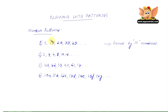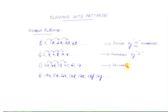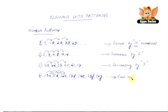Can you spot the rules in these four number patterns? The first one grows by 10. In the second one, each number increases by 2. In the third pattern, each number decreases by 7. In the fourth pattern, each number increases by 1, and each time the letter of the alphabet also goes to the next letter.